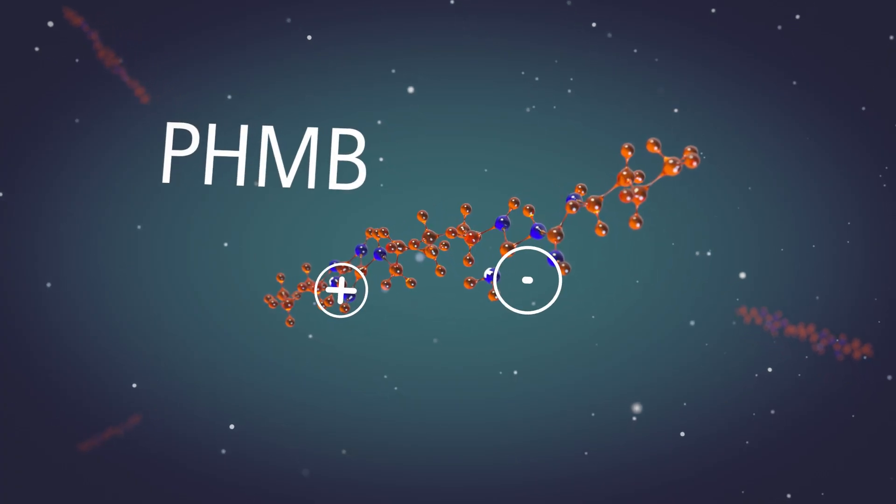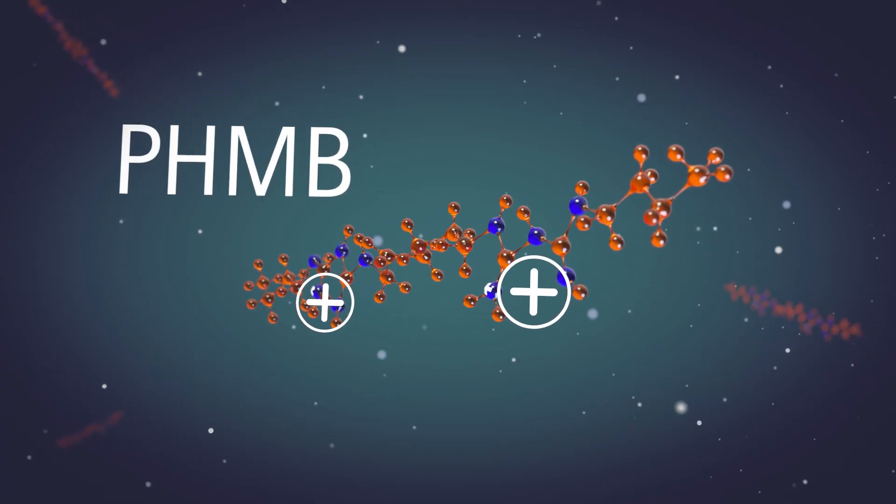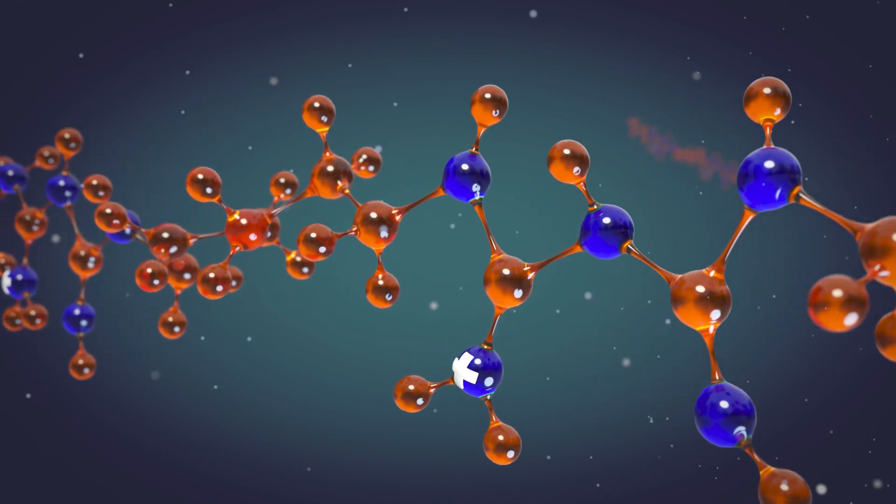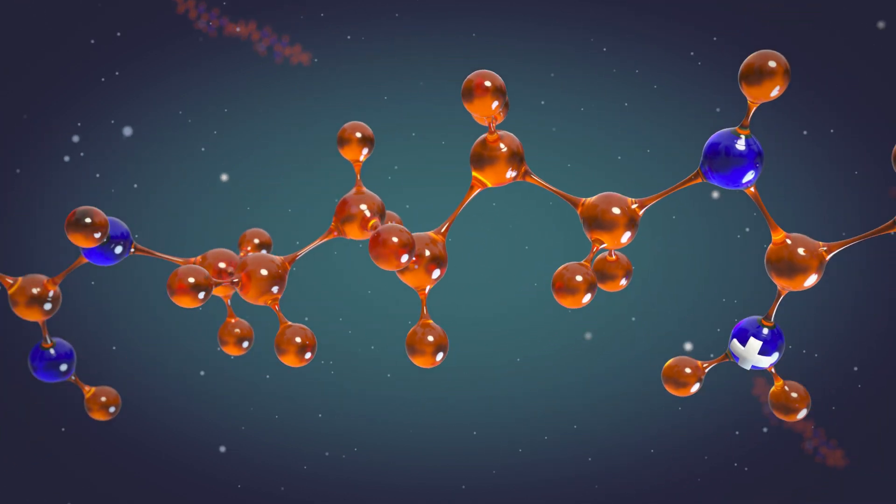Polyhexenide, or PHMB, is used as an antimicrobial substance. It is able to attack and destroy various types of microorganisms.